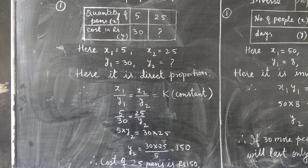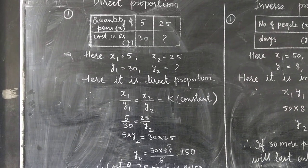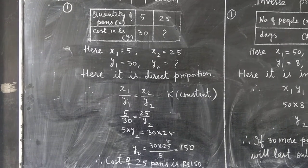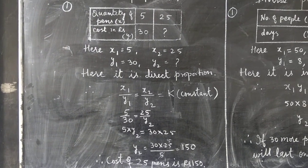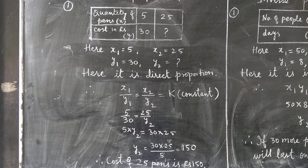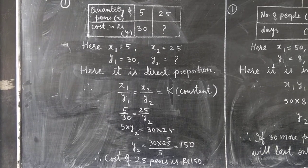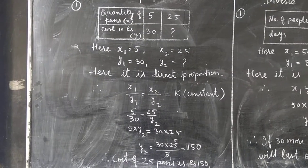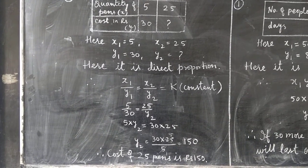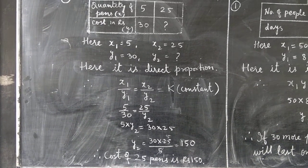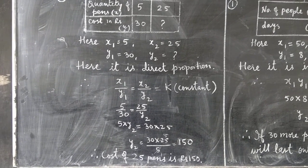Now let us solve example number 1. We take the quantity of pens as x and the cost of pens as y. So 5 pens cost rupees 30; if the pens are 25, what would be the cost? Here x1 = 5, y1 = 30, x2 = 25, and y2 is not given. This is a direct proportion, so the ratio of the quantities is constant: x1/y1 = x2/y2 = a constant.